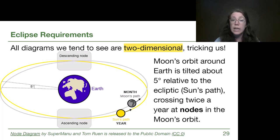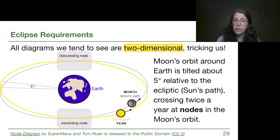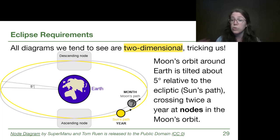If we're going to have a chance to see these all lined up with each other, it will have to be at one of these two special points, which only happens twice a year.